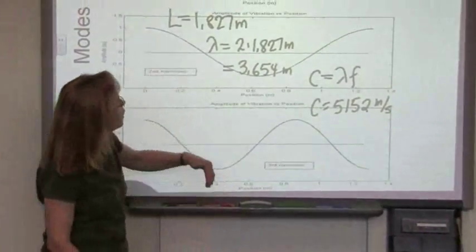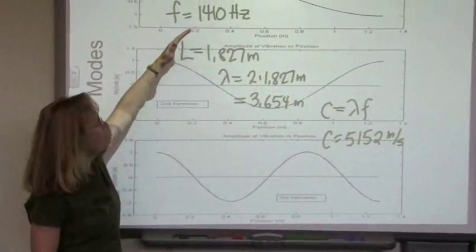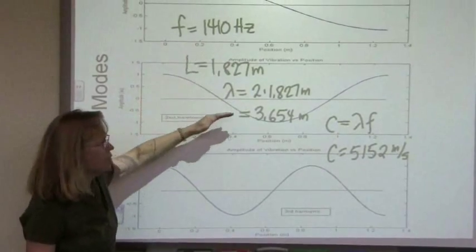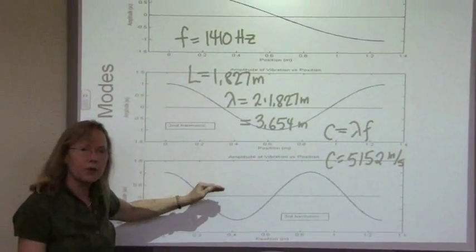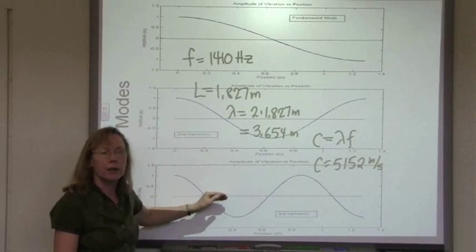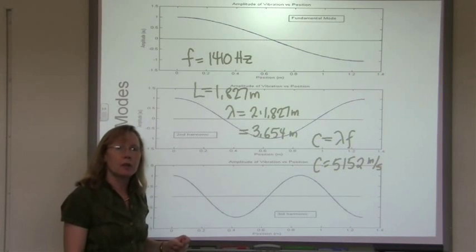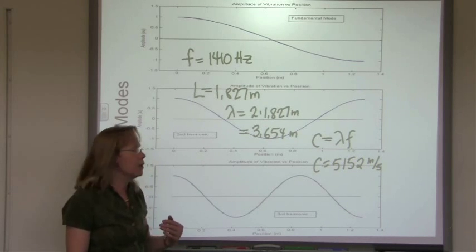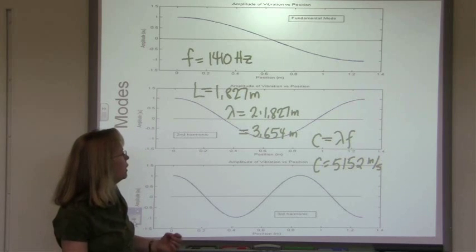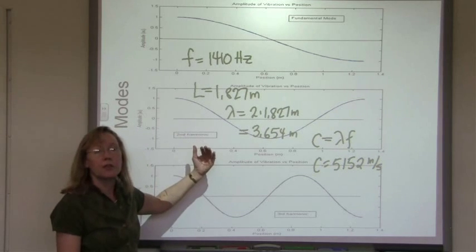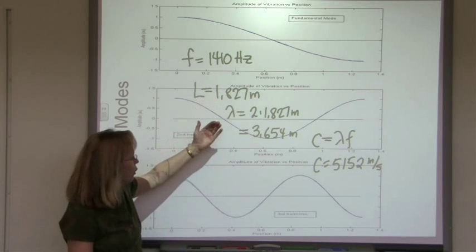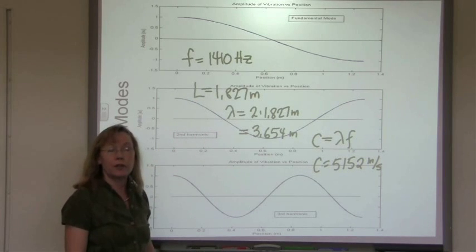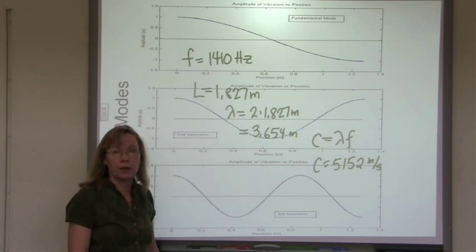And the other thing that I wanted to point out is just to emphasize that all of these modes exist simultaneously on that rod. And that's one of the features in musical instruments which affects the tone of those musical instruments. The timbre, I think they call it, is the fact that you don't have just a single frequency. You have a number of different frequencies which exist simultaneously.